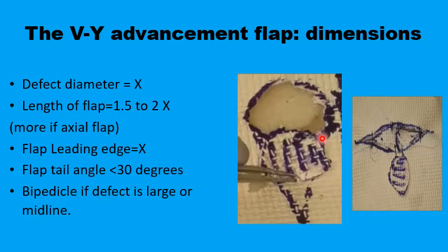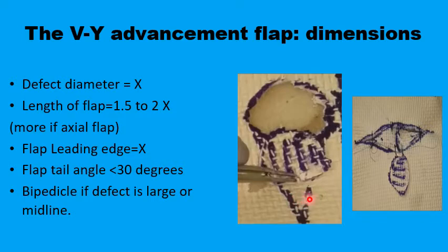For flap dimensions: the leading edge of the triangular flap should be equal to the diameter of the defect (X). The length of the flap should be between 1.5 and 2 X's. The angle at the apex should be about 30 degrees to prevent dog ear formation. If there is not enough tissue laxity on one side, you can use flaps from both sides meeting up, particularly in the midline where symmetry is required.